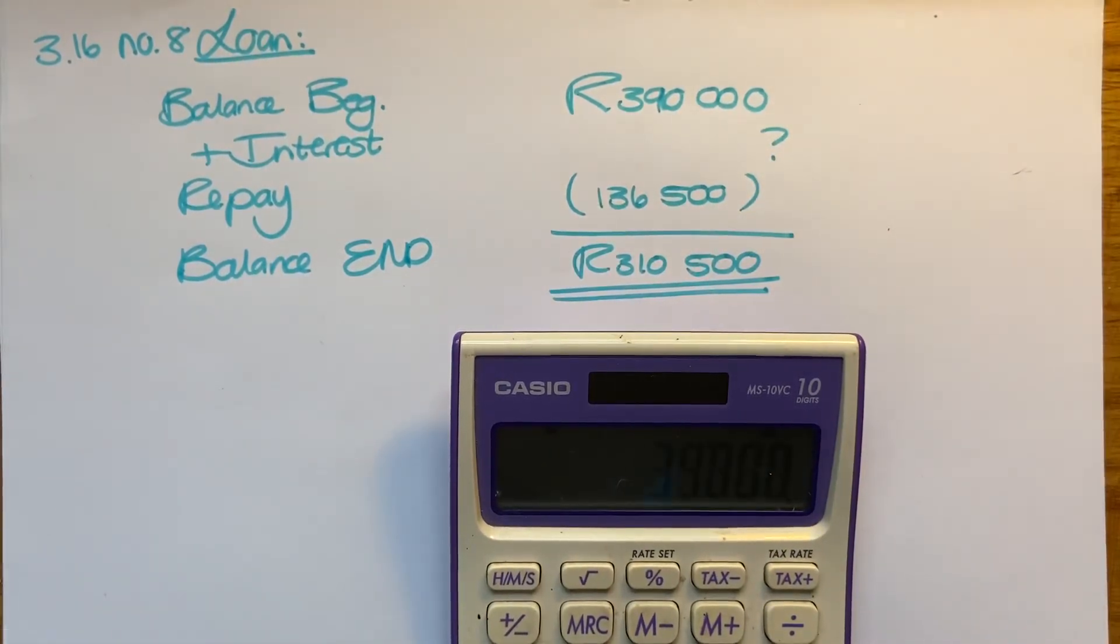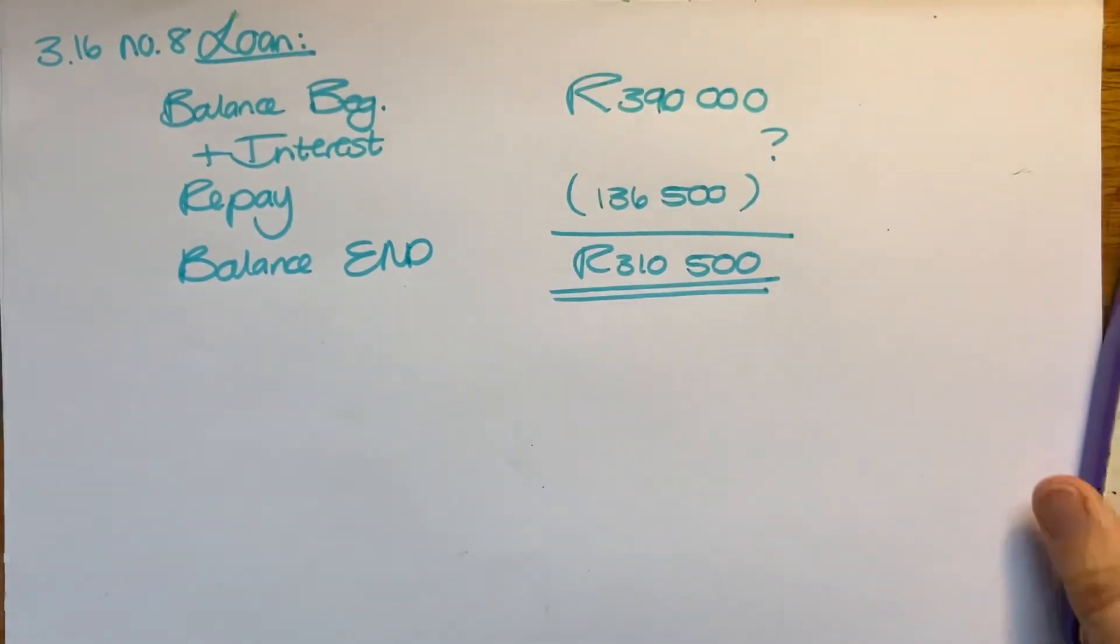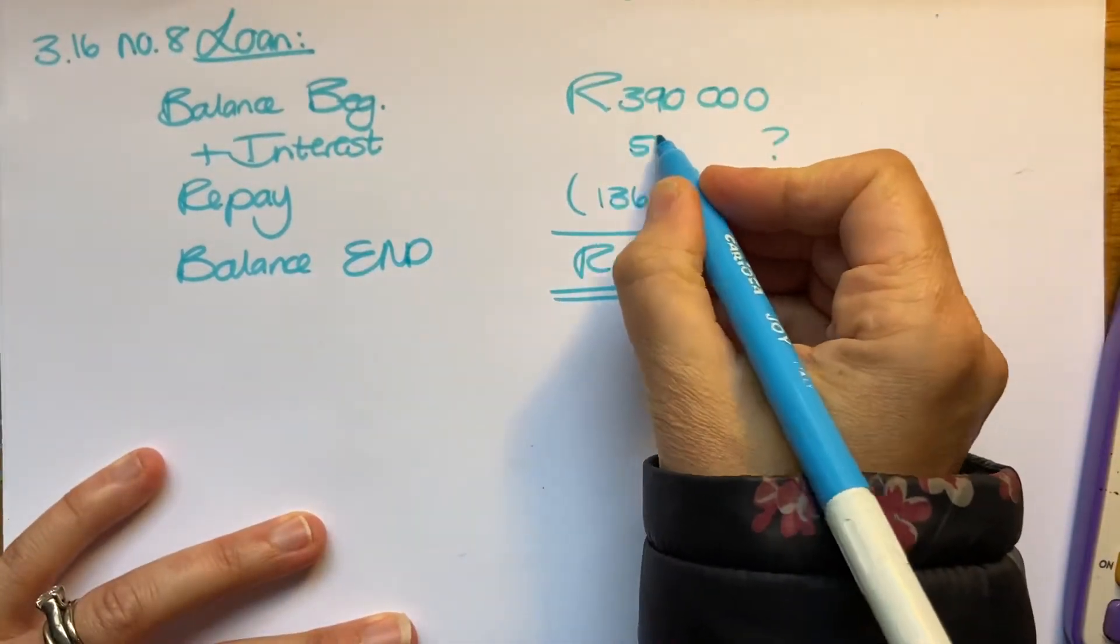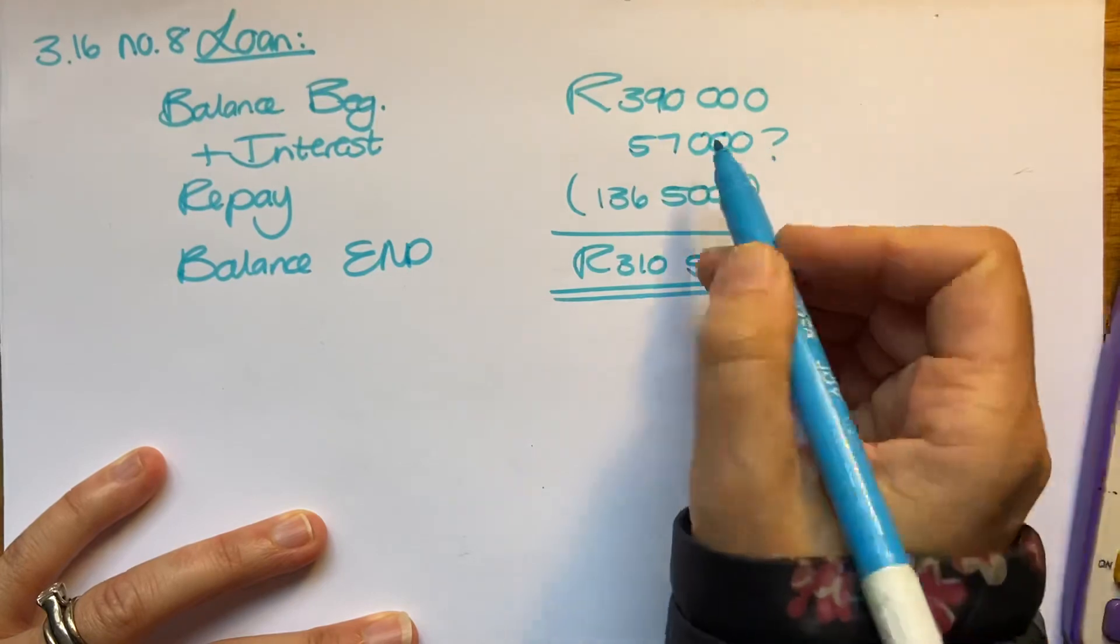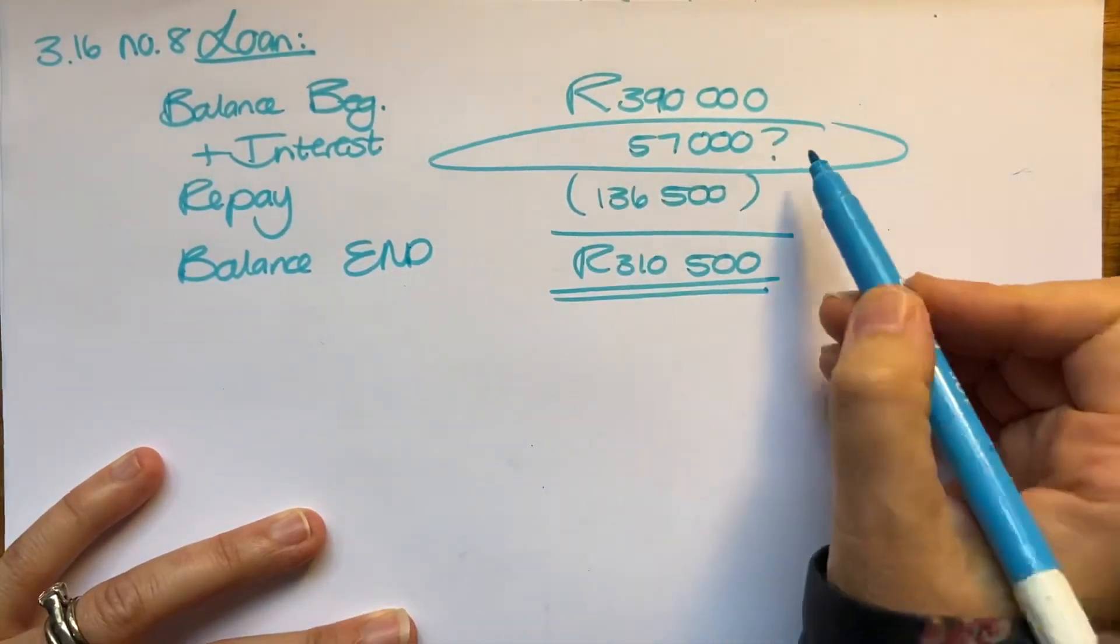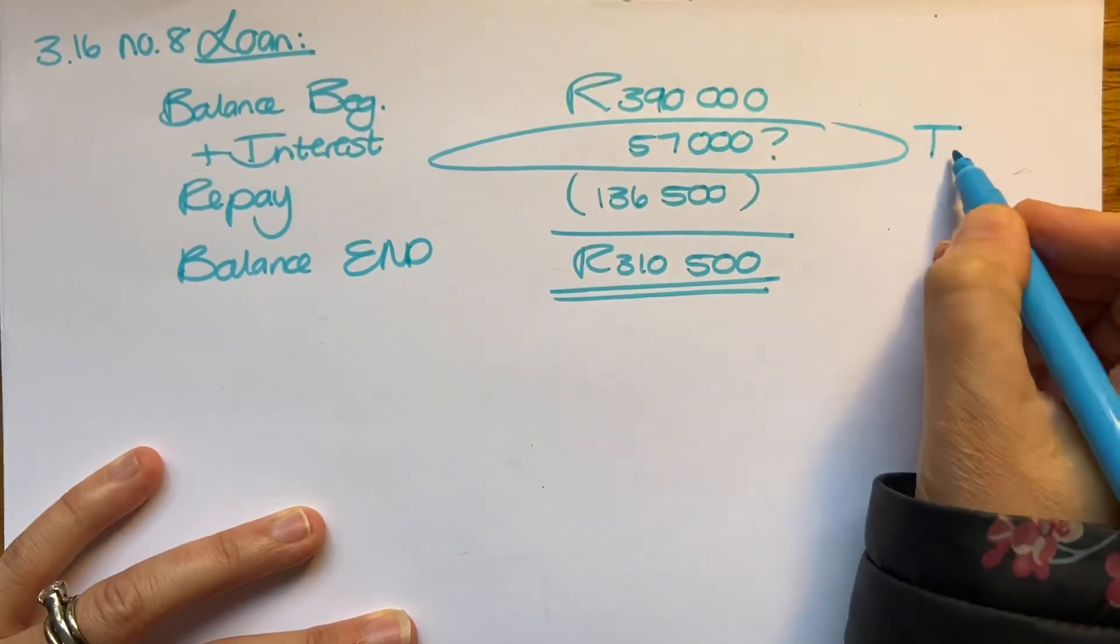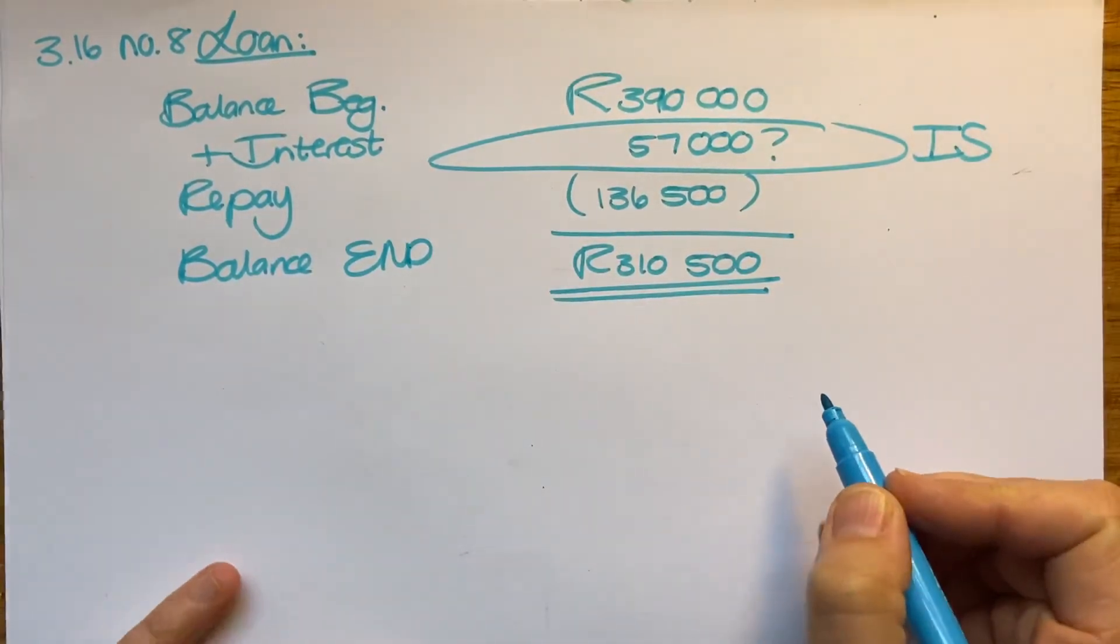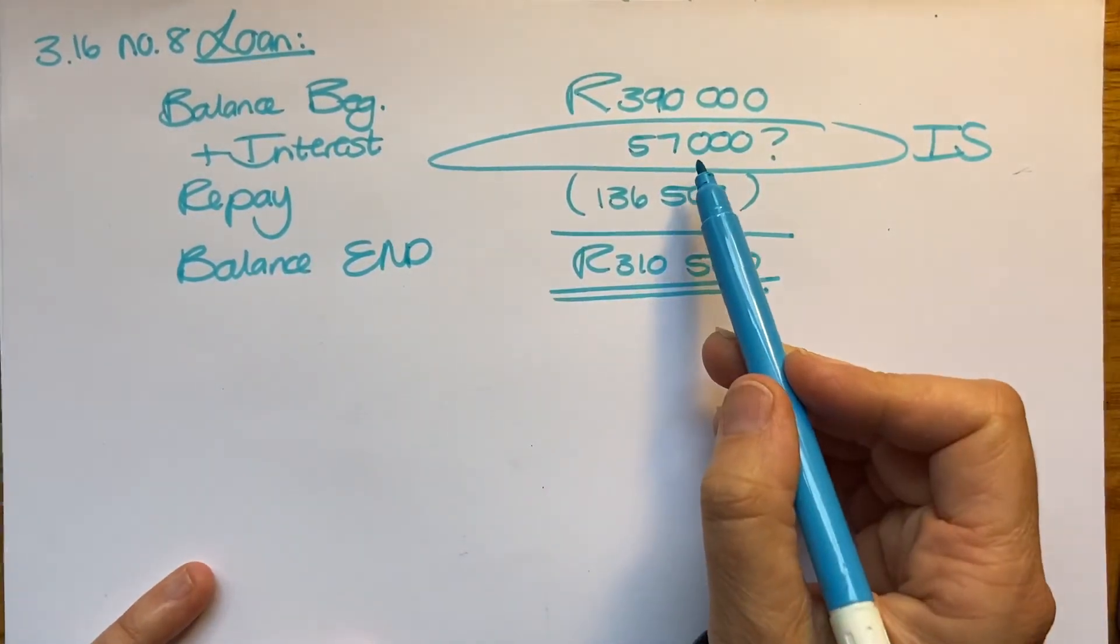So minus 390. If I only owed 390, that leaves me with 57,000 rand that would have been for interest and nothing else. So this will go into your income statement under your interest expenses: 57,000 rand.